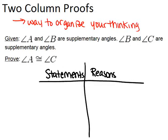When you're doing a two-column proof, you are trying to prove something and you're always given some information to start. You begin with the information that you're given and then make logical conclusions step by step until you reach what you're trying to prove. In this example, angle A and angle B are supplementary angles, angle B and angle C are also supplementary angles, and we're trying to prove that angle A must be congruent to angle C.